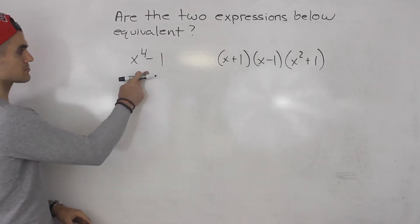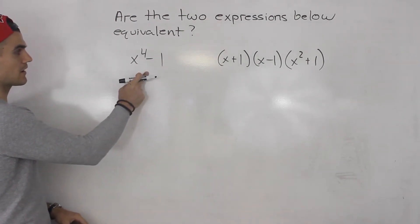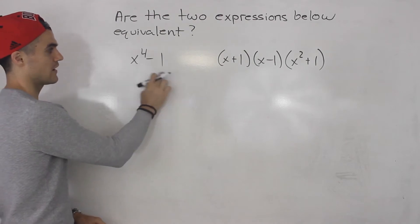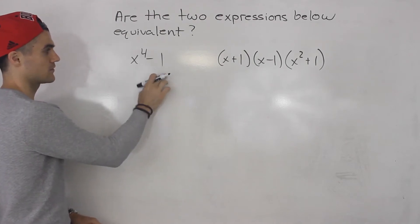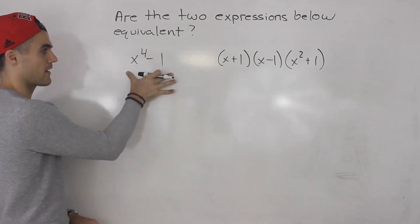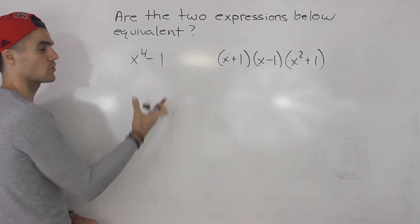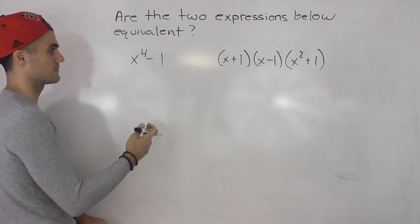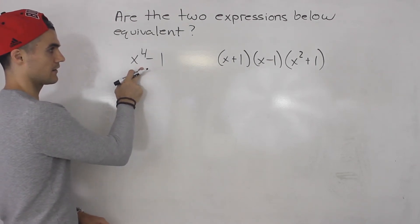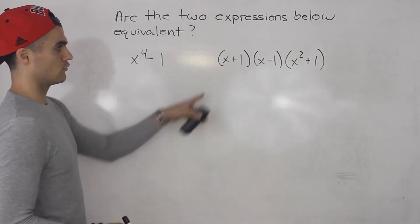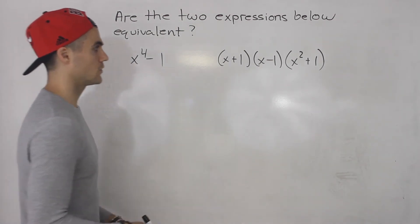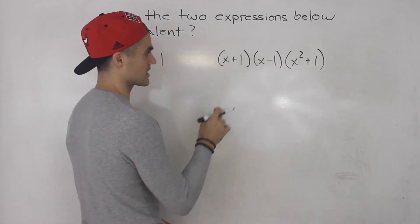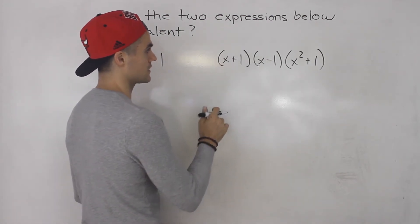Notice with this expression x to the power of four minus one, we can't simplify this anymore. There's nothing to expand and there's no like terms to simplify. So this is done here, but over here we can expand and simplify.